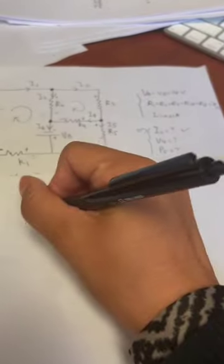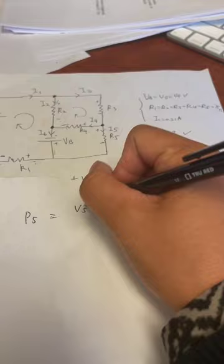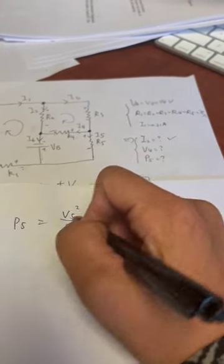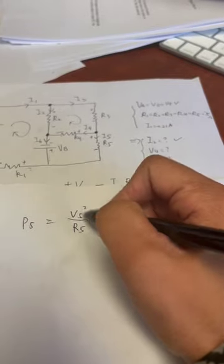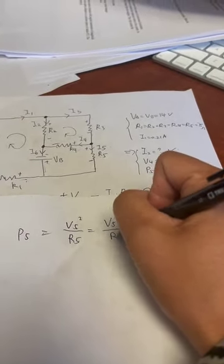The last question is power through R5. So power, how do we calculate power? V squared over R, right? So it would be the voltage drop across resistor 5, voltage squared divided by that resistance. So V5 squared over R.